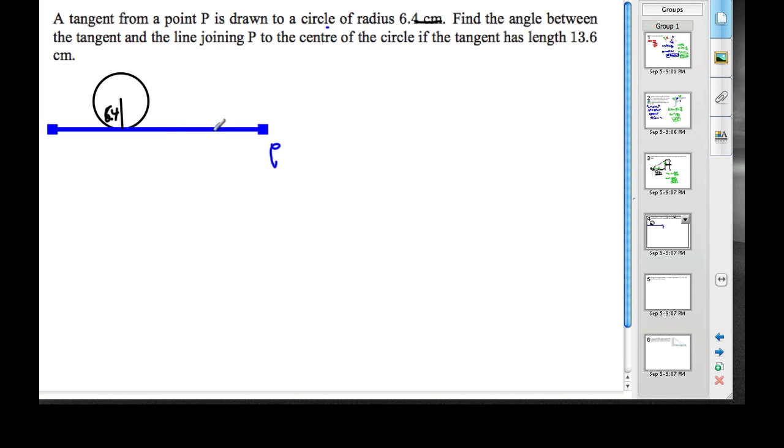Find the angle between this tangent and the line joining P to the center. So the line joins P and goes to the center. Now, one thing that you need to know is that the tangent to a circle touches it at one point. That meets the radius at 90 degrees. Hence, we're dealing with a right-angled triangle.